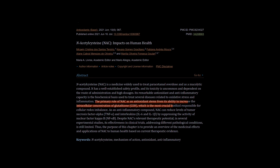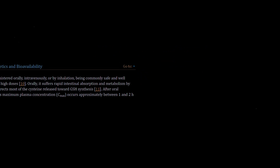NAC is the preferred method of supplementing to increase glutathione. Why? Because oral administration of glutathione is quickly broken down and doesn't cross the blood-brain barrier. Cysteine alone isn't effective at restoring glutathione levels as it oxidizes fast. The best bet seems to be supplementing NAC, which reaches peak plasma levels in 1–2 hours.